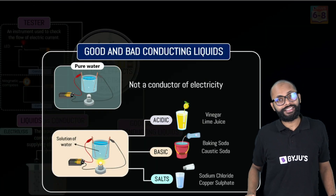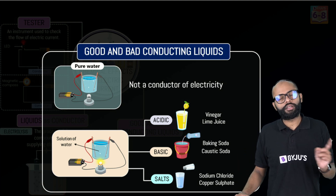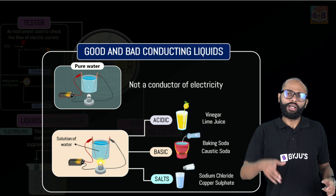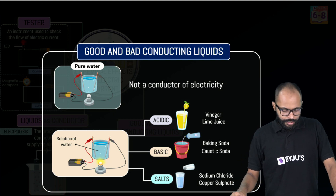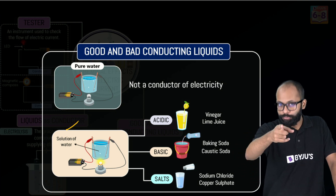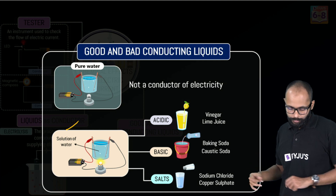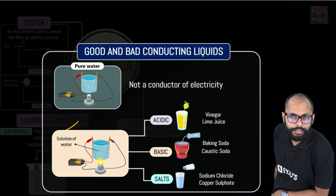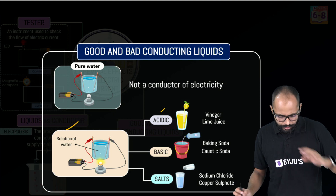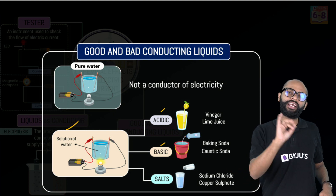Just like in solid materials we have conductors and insulators, in liquids we also have good and bad conductors. Pure water is a bad conductor — it will not conduct electricity. But rainwater is a good conductor because of impurities. If water has impurities, it becomes a conductor. We can add acidic impurities — like vinegar or lime juice — because acids have H⁺ ions. We can also add basic impurities like baking soda or caustic soda, which give OH⁻ ions. Either way, the liquid gets ions and will conduct.